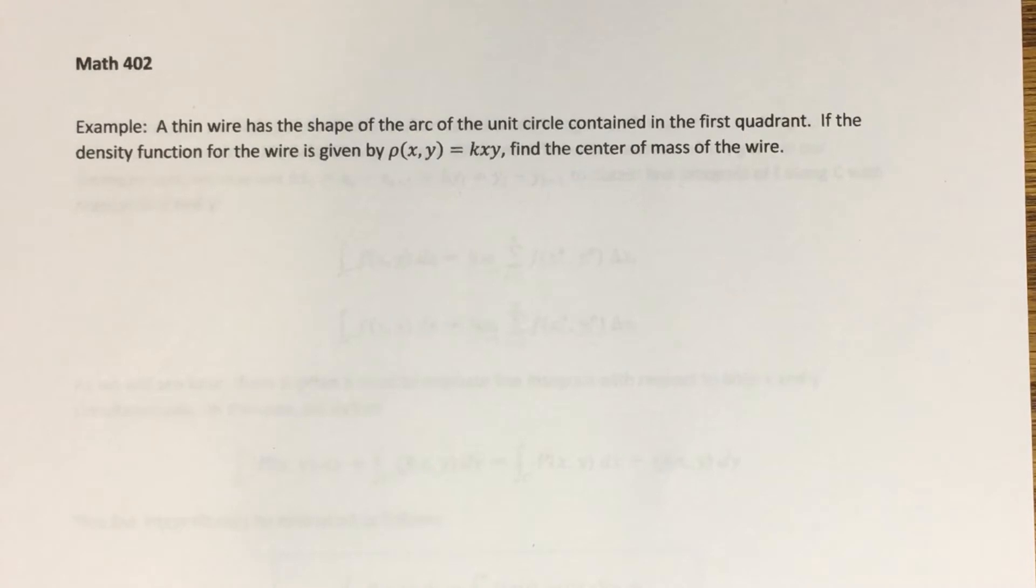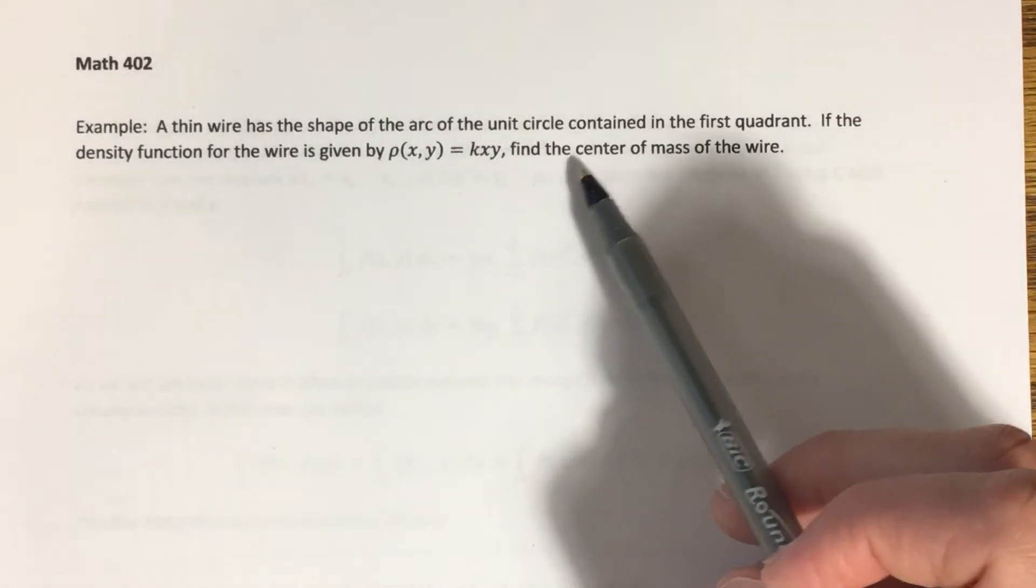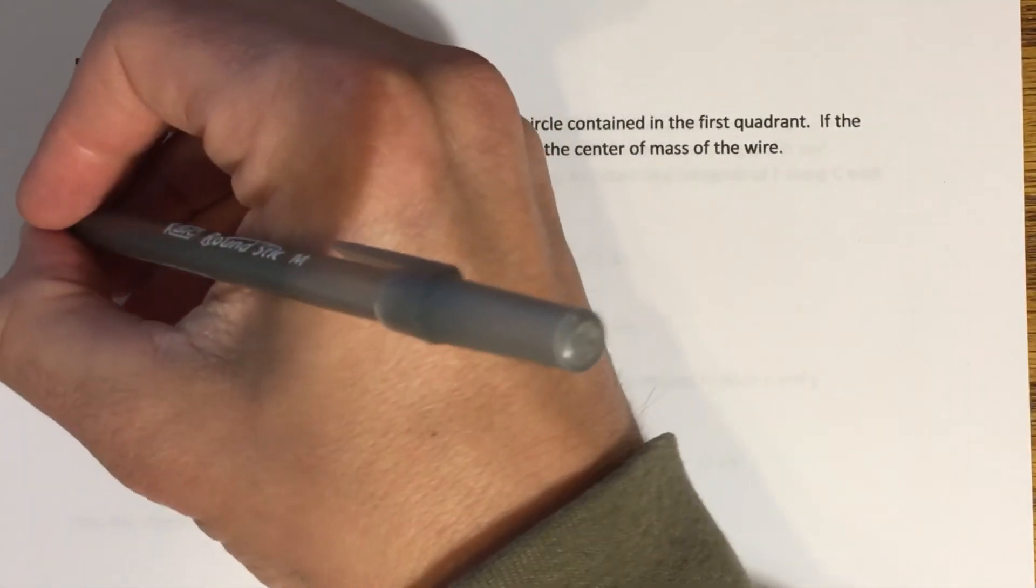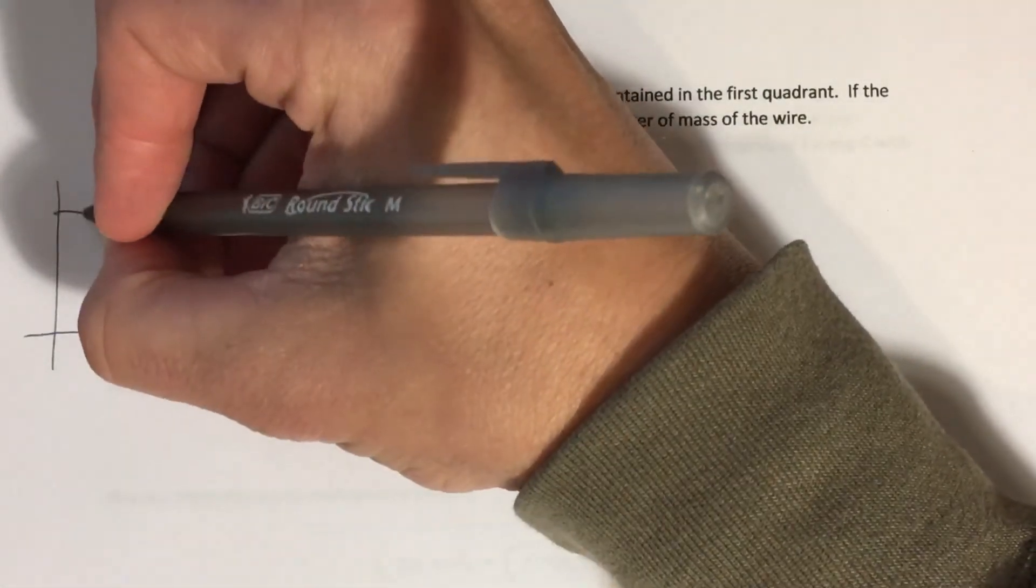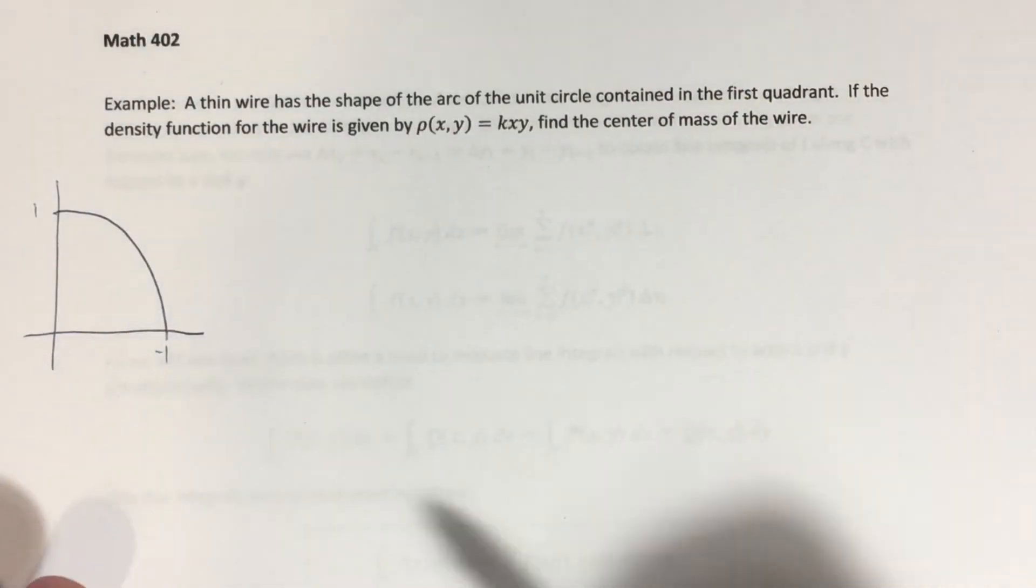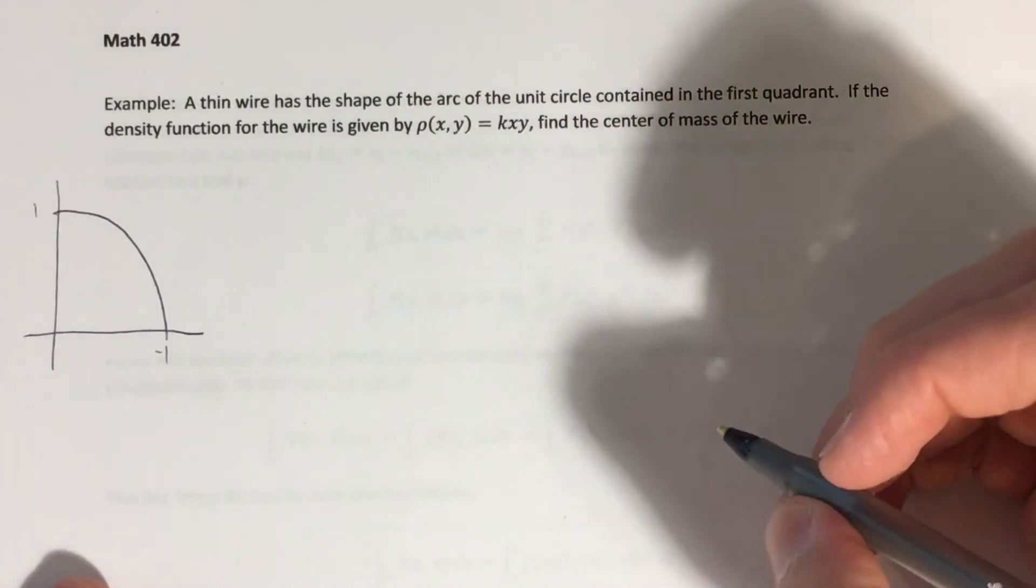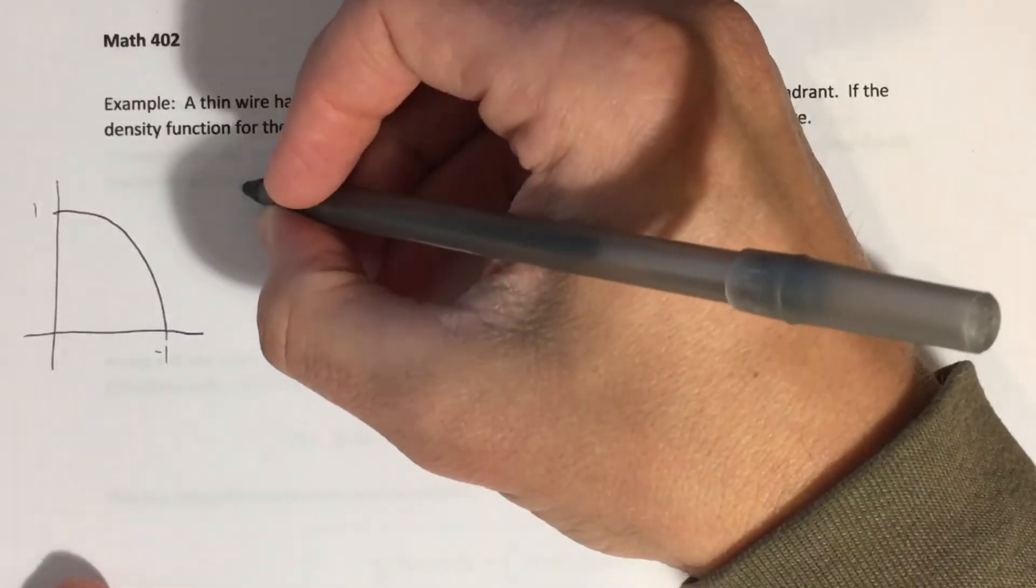All right. A thin wire has the shape of the arc of the unit circle contained in the first quadrant. If the density function for the wire is given by this, k x y, k is some constant here. We want to find the center of mass. So I'm going to sketch this region first. Or sorry, I called it a region. It's not a region. I sketch the curve. The curve we're looking at is here, one, negative one. It's the unit circle, but only the part of the unit circle that's in the first quadrant. Okay. So now I need a parametrization for that.